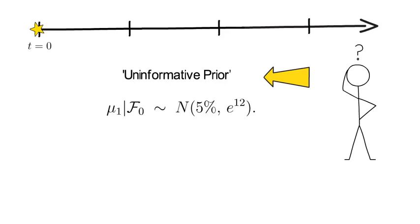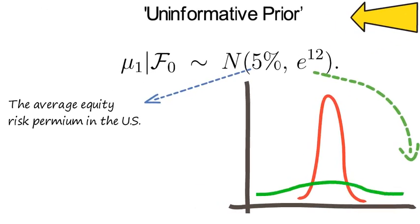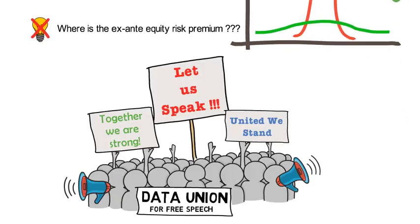So the 5% mean is not crazy when modeling equity excess returns as the average equity risk premium in the US has been somewhere around 5%. At the same time the gigantic variance e to the 12 makes the bell shape of the Gaussian look more like a flat line. Now that captures this notion that the investor has simply no clue of where the ex-ante risk premium is and that he wants the data to speak.